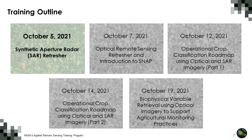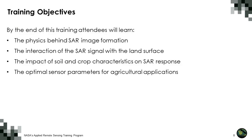On October 12th, we'll introduce a roadmap to operational crop classification using optical and SAR imagery — part one of two. The second part will be presented on October 14th. The final session, on October 19th, will focus on biophysical variable retrievals using optical imagery to support agricultural monitoring. The training objectives are to learn the physics behind SAR image formation, the interaction of the SAR signal with the land surface, the impact of soil and crop characteristics on the SAR signal, and the optimal sensor parameters for agricultural applications.